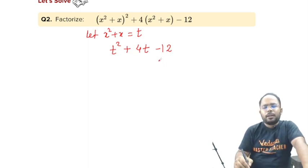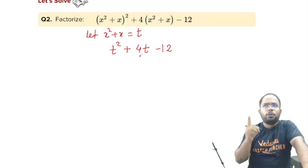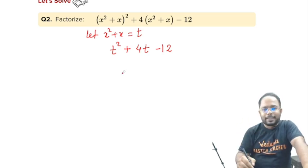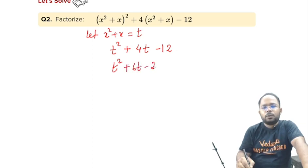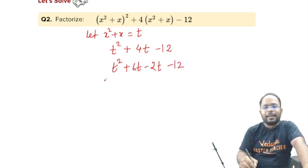We can think of the 2 numbers which can be multiplied so that we get minus 12 and they can be added or subtracted to get 4. We can think of 12. 2, 6 are 12. Yes. We can take +6t - 2t. That is 6 into -2, we get -12 and 6 minus 2 is 4 with the positive also. We are getting the middle term also.